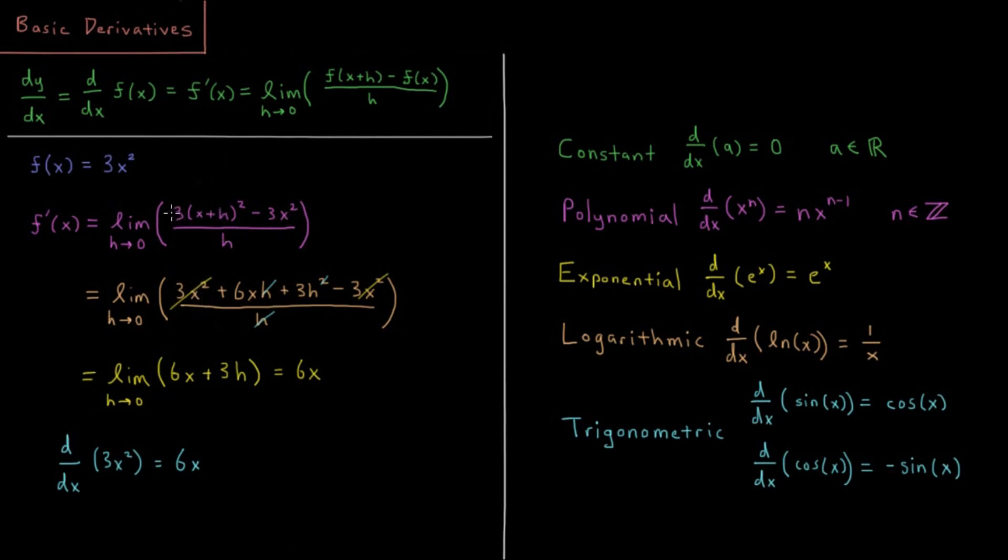This polynomial multiplied out gives us 3x squared plus 6xh plus 3h squared, minus 3x squared. So we've got this 3x squared cancels with that 3x squared, the yellows are canceling corresponding to each other.